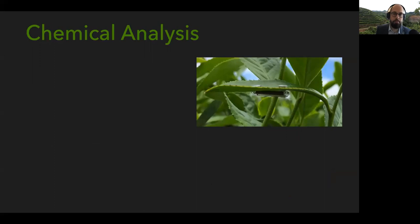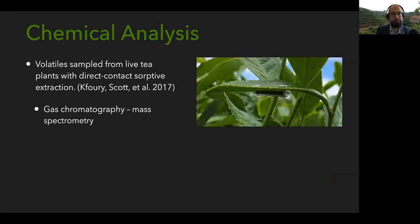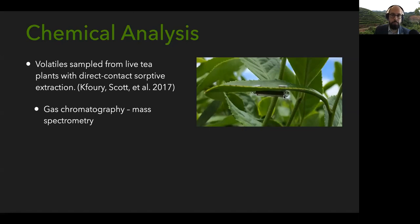We analyzed the chemistry of the plants. For volatiles, we collected them from live tea plants using a technique called direct contact absorptive extraction, which Nicole Kofori and I created and published in the Journal of Agricultural and Food Chemistry. We place a small magnetic stir bar coated with a silicone polymer that absorbs volatiles from the leaf surface and surrounding air. Because it's a magnet, we can attach it to the leaf with two small neodymium magnets on top. I then put those in a vial, ship them to Tufts, and analyze them with gas chromatography and mass spectrometry.